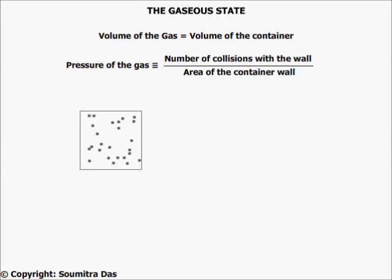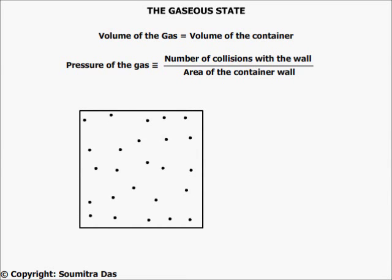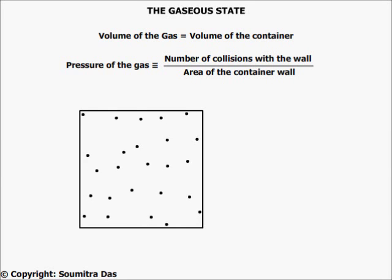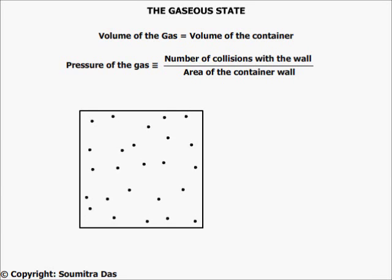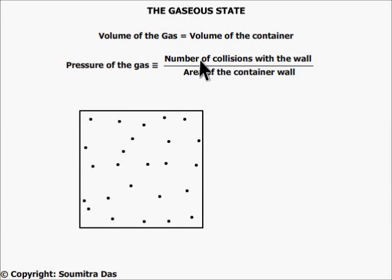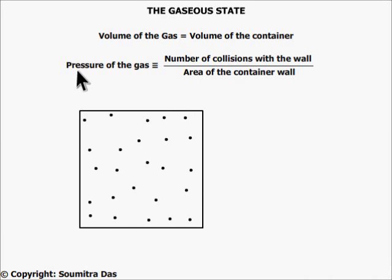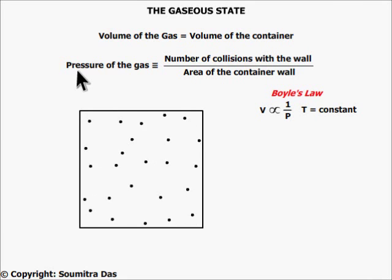Now let us see what happens when we increase the volume at constant temperature. The gas molecules will now occupy the whole of the container, as gases do not have a boundary surface and assume the shape of the container due to very weak intermolecular attraction. The temperature is constant and so is the random motion of the molecules. The number of collisions will also remain the same, but the area has increased, and so the pressure will fall. So as volume increases, pressure will decrease. This is Boyle's law.